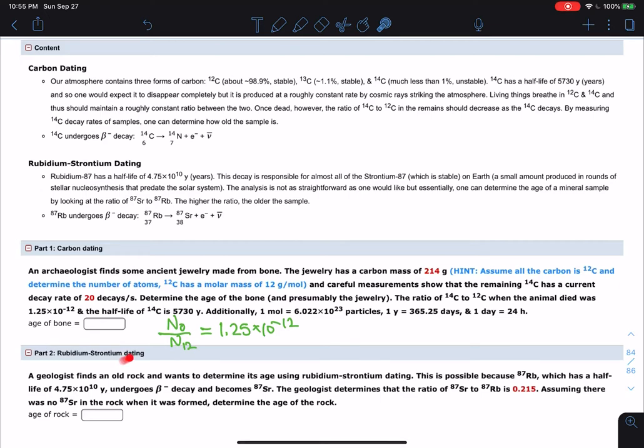Now, as for the rubidium-strontium, okay, so this one is a little different. So rubidium-87 has a very long half-life. So we use this to measure things that are very old.